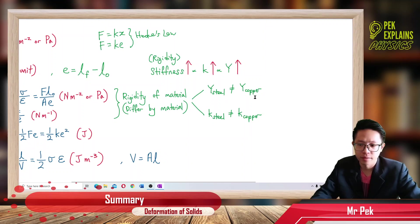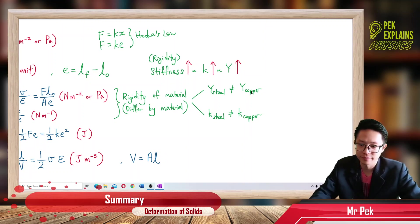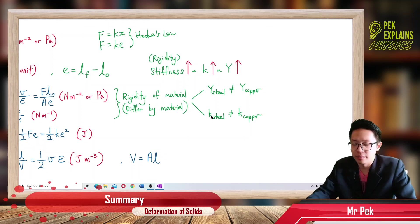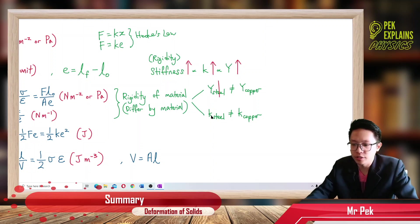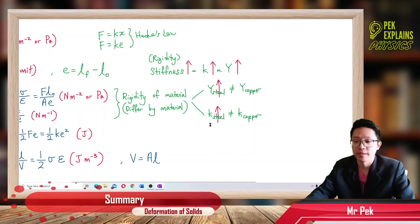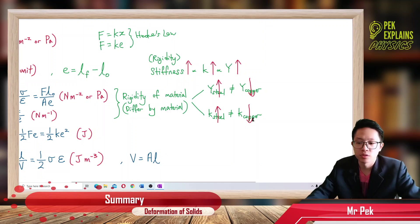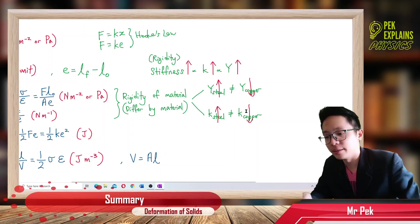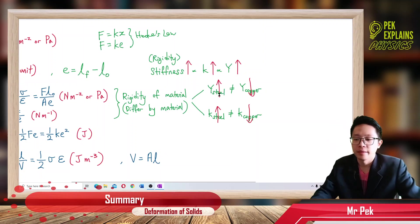For example, steel and copper — these two materials have different Young's modulus and also different force constant. Their values of Y and K are different because they have different material. Which one has higher Young's modulus and force constant? Of course the tougher one. Steel is more rigid, more tough, more stiff, so it has higher Young's modulus and higher force constant. Copper has lower Young's modulus and lower force constant because it is a soft metal.